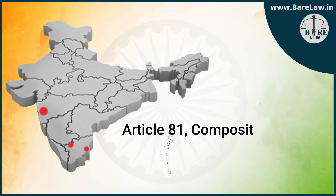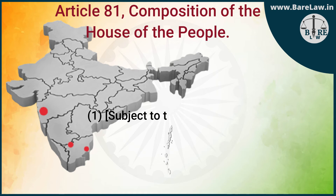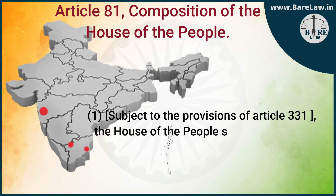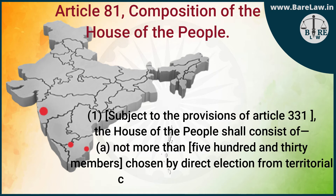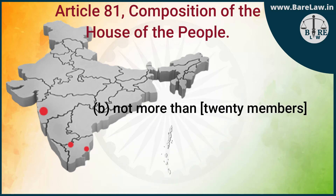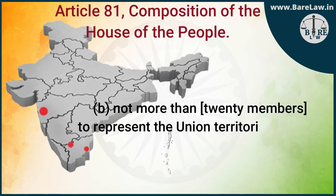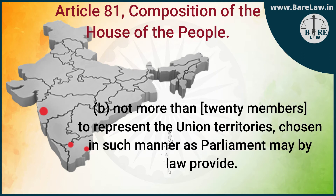Article 81: Composition of the House of the People. Sub-Clause (1): Subject to the provisions of Article 331, the House of the People shall consist of — (a) not more than 530 members chosen by direct election from territorial constituencies in the States, and (b) not more than 20 members to represent the Union Territories, chosen in such manner as Parliament may by law provide.